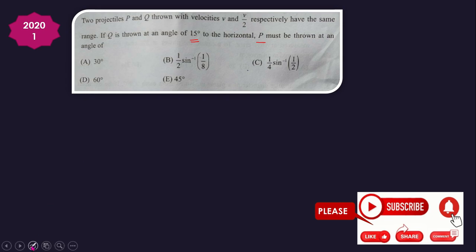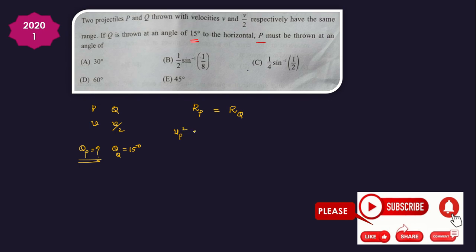We have two projectiles and the velocities v and v by two. The ranges of P and Q are equal, and Q is given as 15 degrees. We write the range formula: R = u² sin2θ / g. Setting range of P equal to range of Q: up² sin2θP / g = uq² sin2θq / g. The g terms cancel.